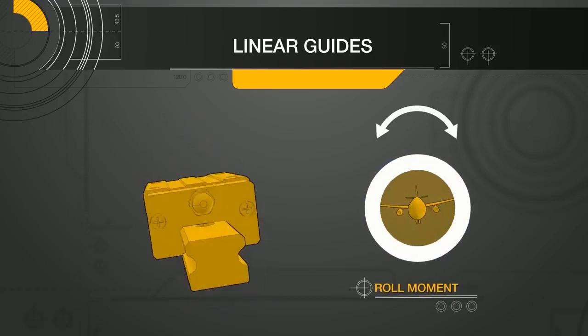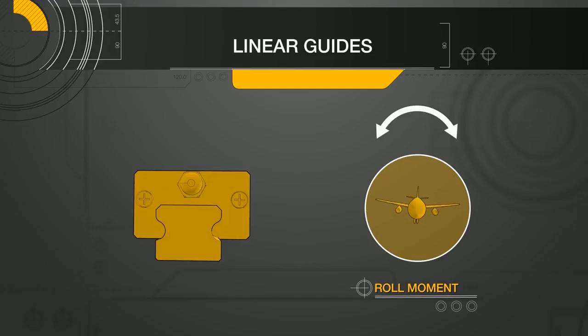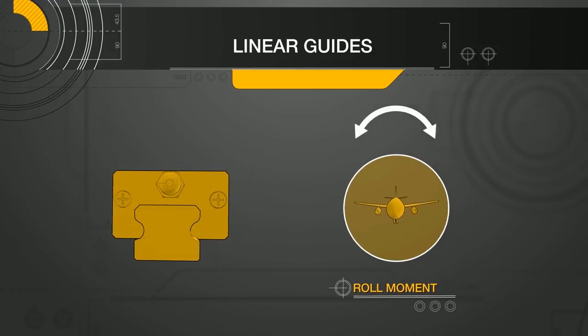The final moment is the roll moment. The roll moment is a vertical tilt or rocking side to side. This can be a result of lateral or radial loads, depending on the load locations.